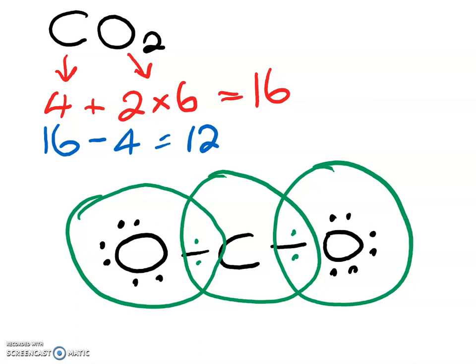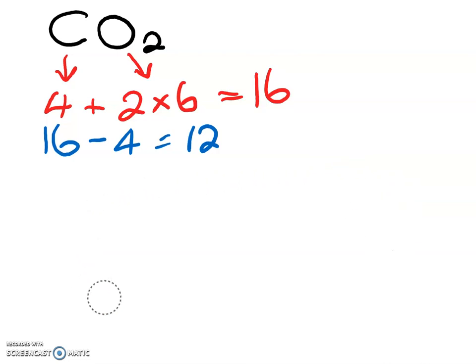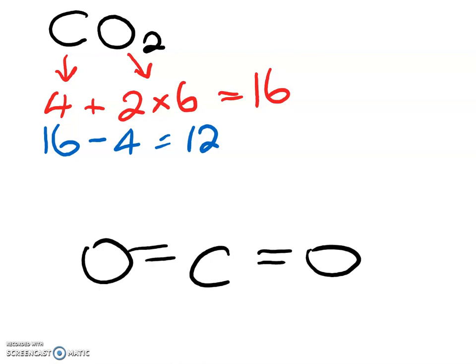What we need to do is take away one lone pair of electrons from each oxygen and turn them into a second bond, giving us a double bond on each side. With those double bonds, the oxygen has access to eight electrons and the carbon has access to eight electrons. So the Lewis diagram for carbon dioxide has the carbon in the middle, oxygens on the outside with double bonds, and two lone pairs on each outer oxygen atom.